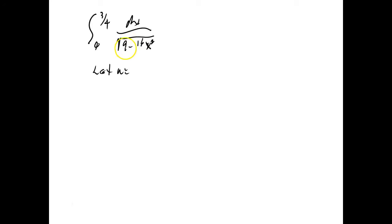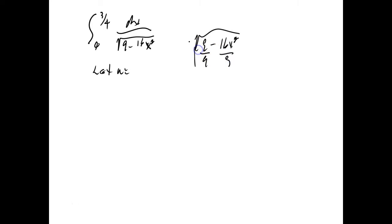You want a 1 here, so the first thing we're going to do is divide everything inside by 9. That means you have to multiply on the outside by 3, because the 9 is inside the radical and the square root of 9 is 3. So you're dividing everything inside by 3, and multiplying by 3 on the outside.